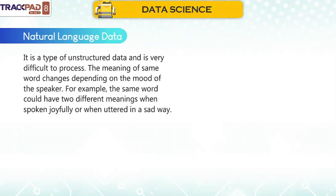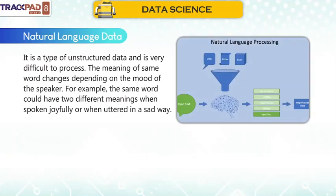Natural language data is a type of unstructured data and is very difficult to process. The meaning of the same word changes depending on the mood of the speaker. For example, the same word could have two different meanings when spoken joyfully or when uttered in a sad way.